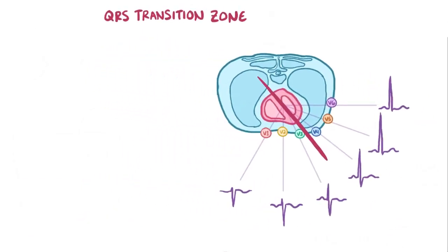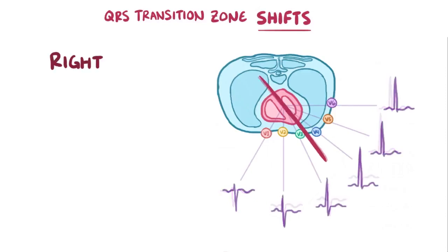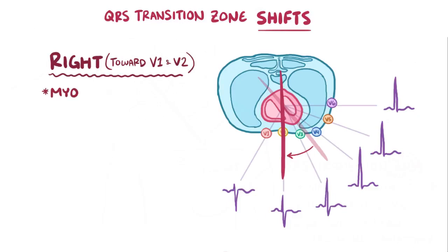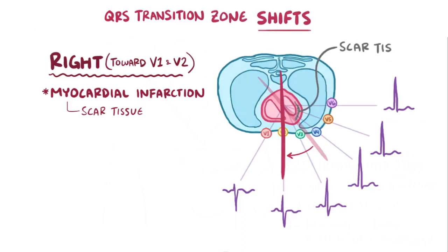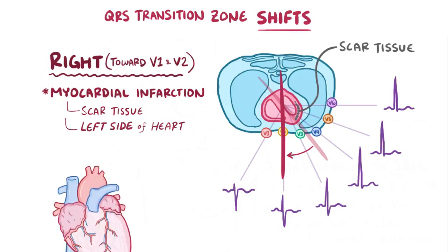If something alters the heart's overall QRS vector, then the QRS transition zone might shift to the right, toward V1 and V2. An example is a myocardial infarction, which leads to the formation of scar tissue that can't depolarize. Generally speaking, the QRS transition zone will shift away from the region of scar tissue, since it no longer contributes to the overall QRS vector. So in order for it to shift right, the infarction would have to be on the left side of the heart.